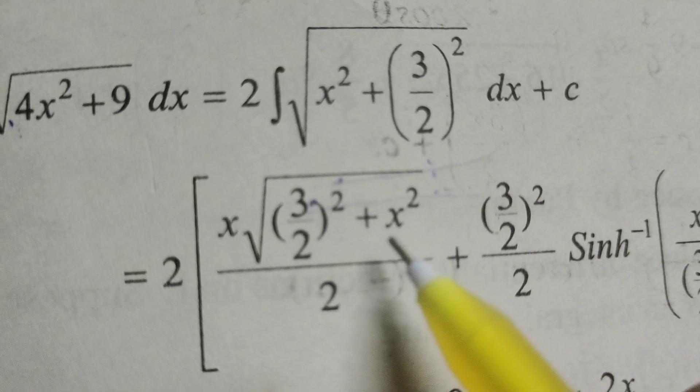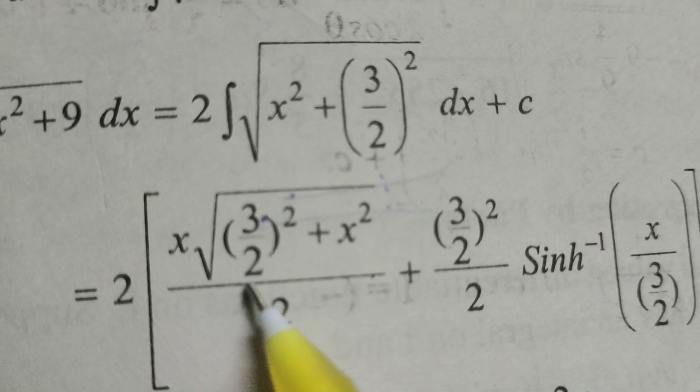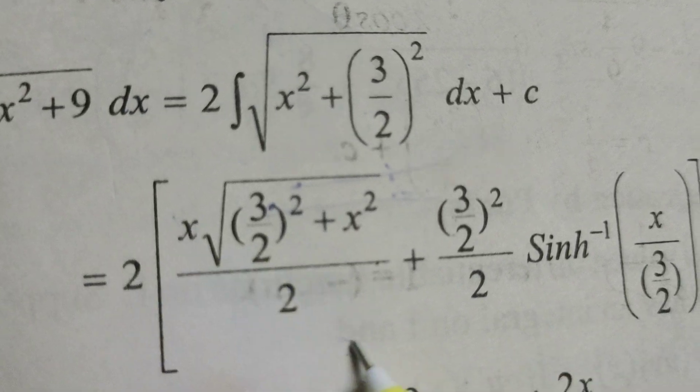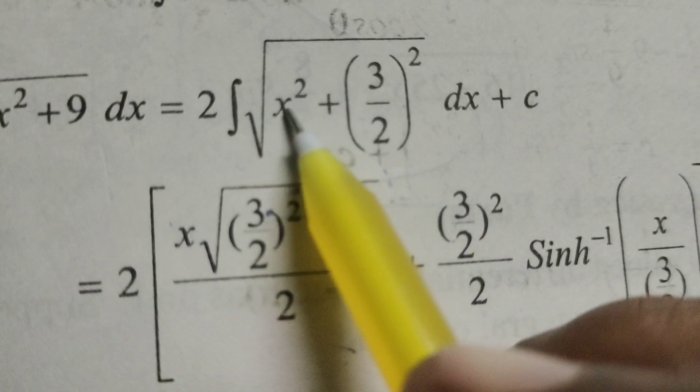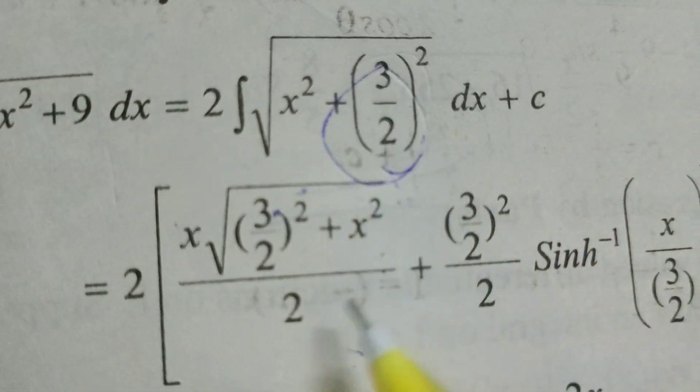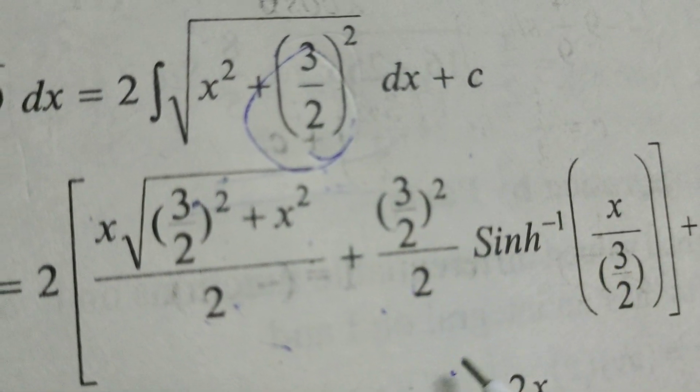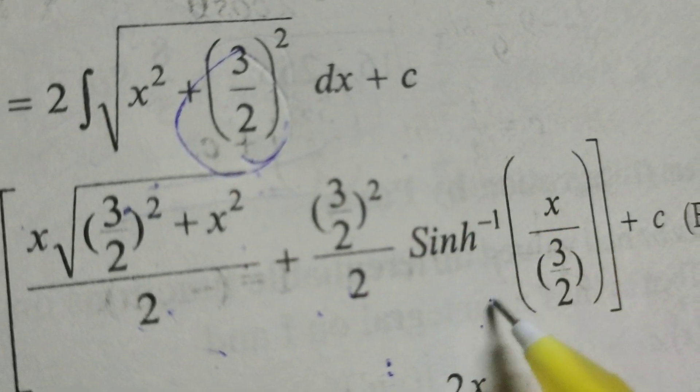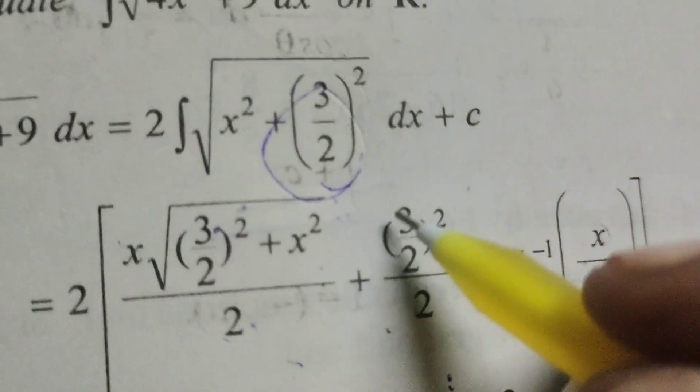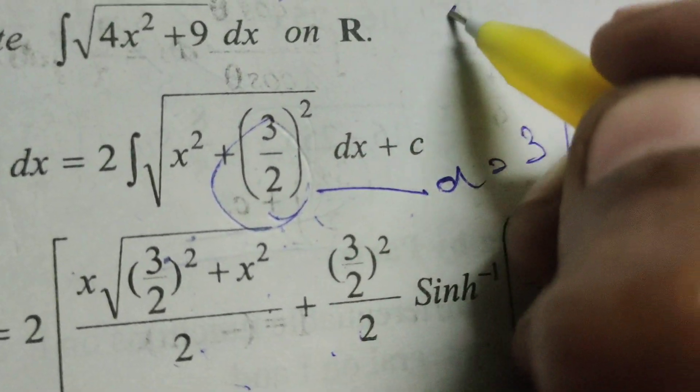Now here using the formulae x by 2 root of a squared plus x squared, what is a here, 3 by 2, plus a squared by 2 sinh inverse of x by a formulae. So using this formulae, here write a means 3 by 2.